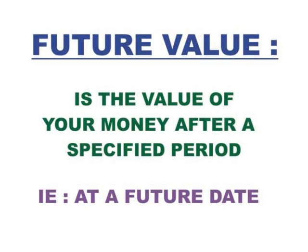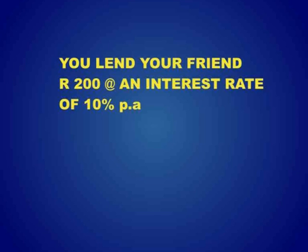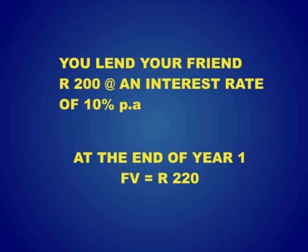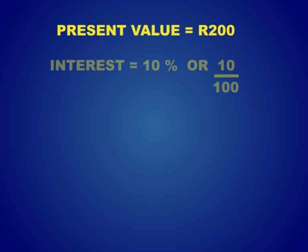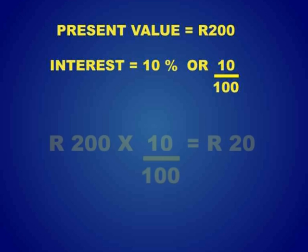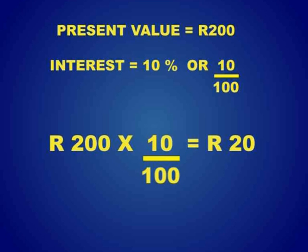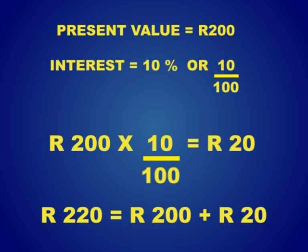Let us look at an example. You lend your friend 200 Rand and you charge him 10%. At the end of the first year, your Future Value is going to equal 220 Rand. Because your Present Value was 200 Rand — the money that you lent him — you charged him 10% interest. 10% of 200 Rand is equal to 20 Rand, which is what you charged him for using your money. At the end of the first year, he owes you 220 Rand, which is your Present Value plus the interest component.